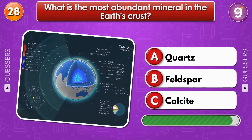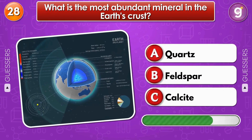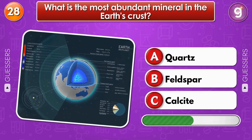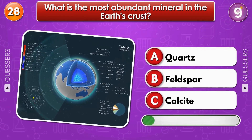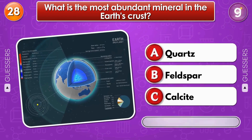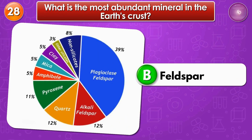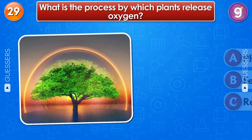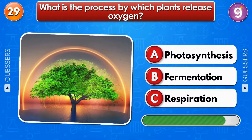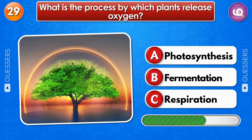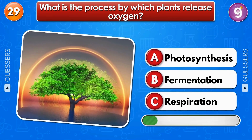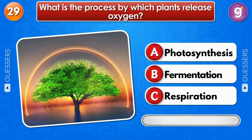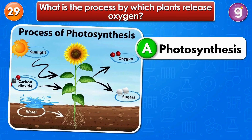What is the most abundant mineral in the earth's crust? Feldspar. What is the process by which plants release oxygen? Photosynthesis.